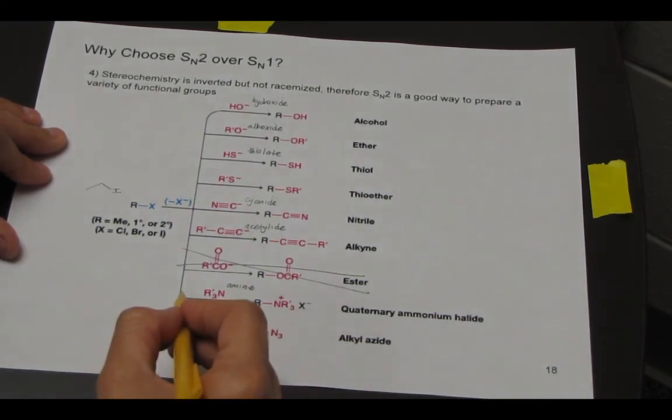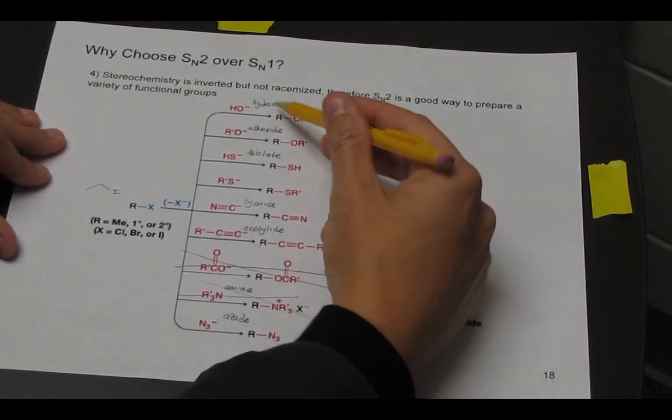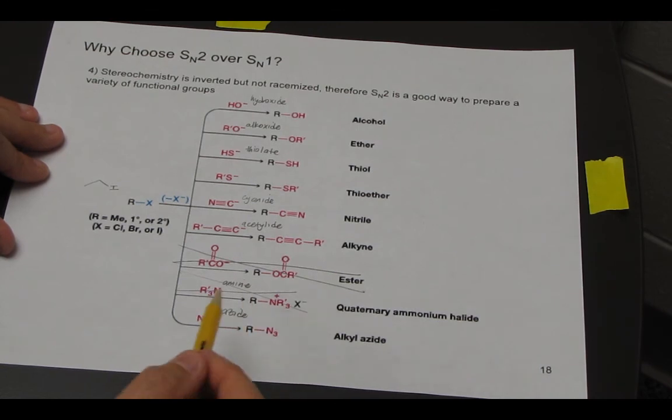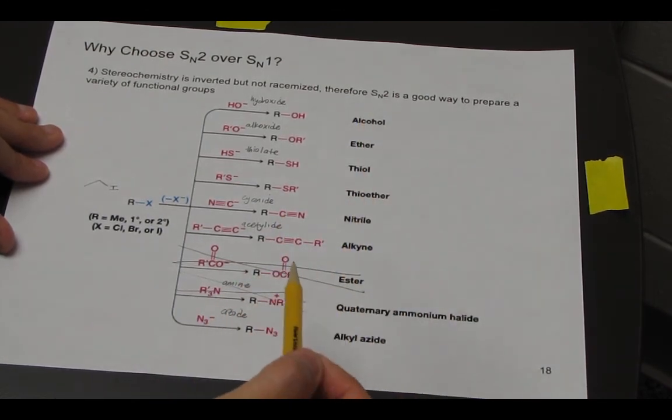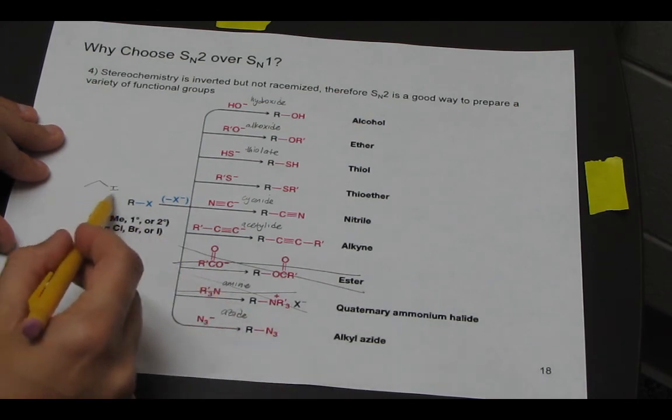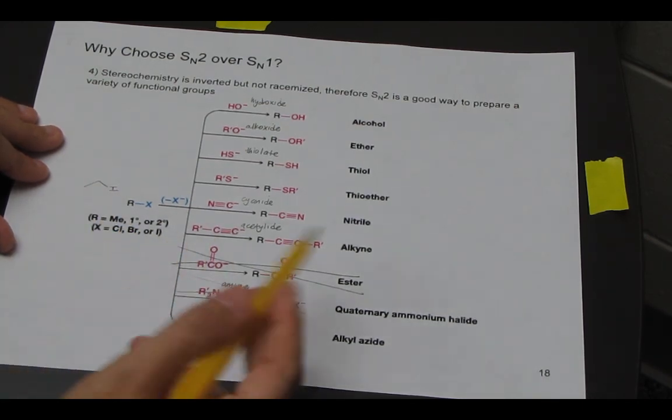So if we kind of ignore this one, because it can be a little tricky at this stage too, you should be familiar with these other nucleophiles and these are the functional groups that result. And you should be able to take any of these and add them to any substrate that's primary or secondary leaving group, and be able to draw the products that result.